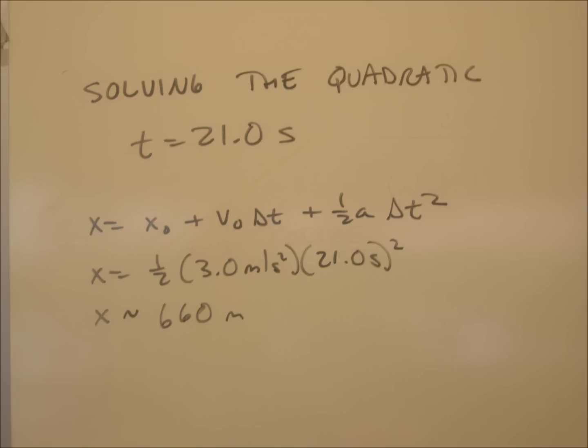You can also ask the question: how far away from the start of the chase did it end? In order to find that answer, you can just sub in our result of 21 seconds back into the expression we built for the police car. So we have x equals x₀ plus v₀Δt plus ½aΔt². The x₀ and v₀ terms drop out because they're both zero. So we have x equals ½ times 3 meters per second squared times 21 seconds squared. The seconds squared terms drop out, and we're left with about 660 meters.